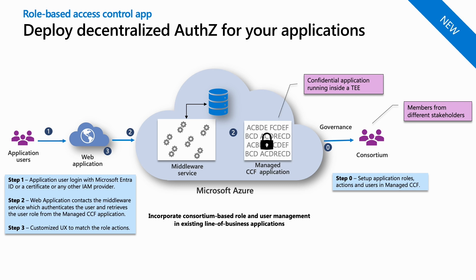Moreover, the applications are compartmentalized through a variety of mechanisms like access control lists and just-in-time authorization policies to protect sensitive data and intellectual property. The diagram shows the high-level design of a line-of-business application that has a user interface layer, a middleware layer, and a persistence layer.